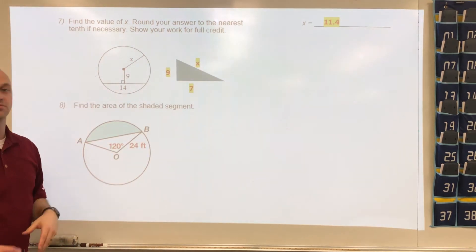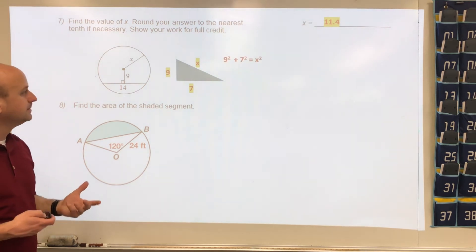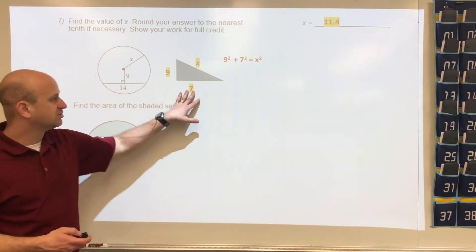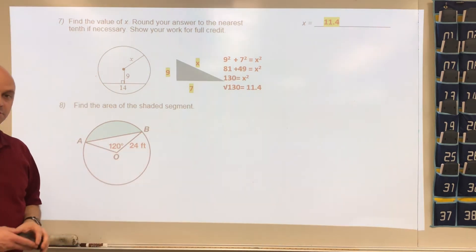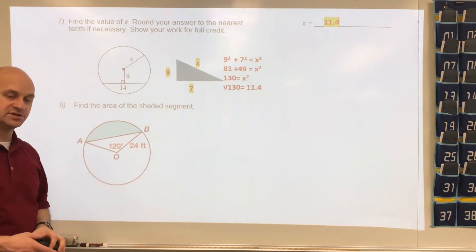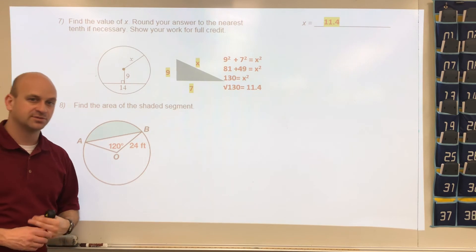We're trying to find this. The answer is going to be 11.4. For those that need a little Pythagorean theorem review, we have 9² + 7² = x². When we go through the math, we end up with the square root of 130, which would be in decimal form 11.4.